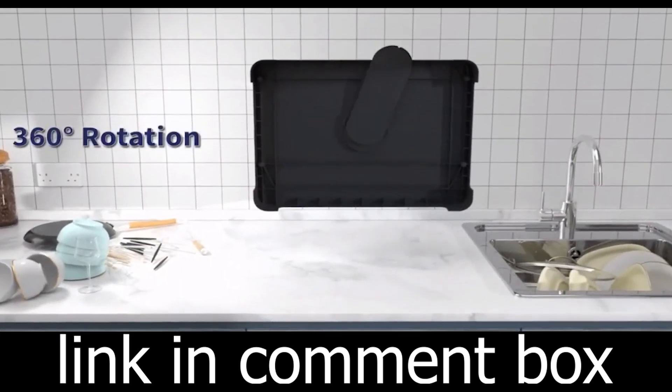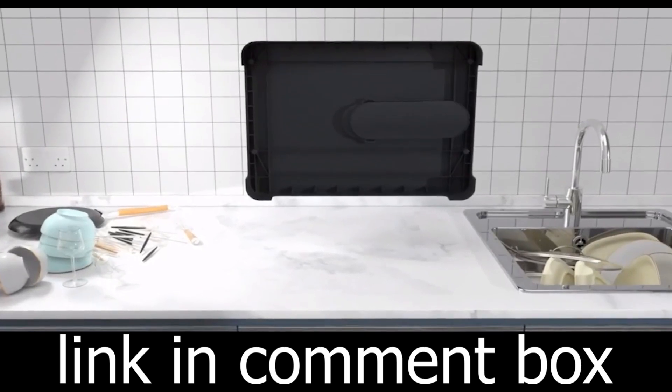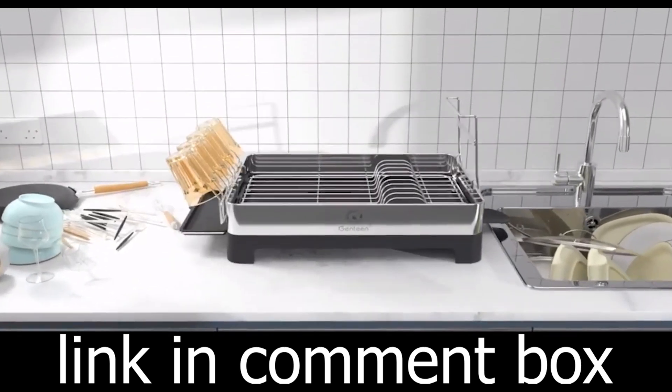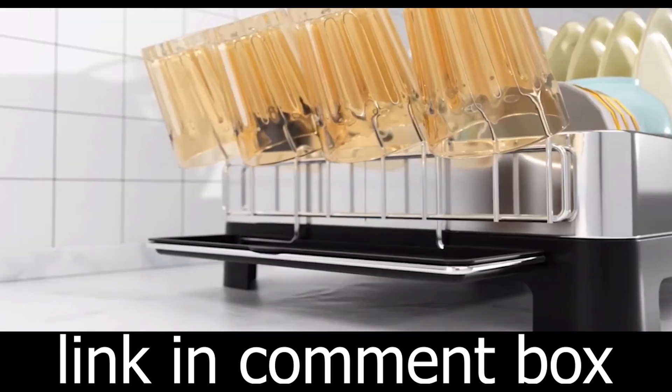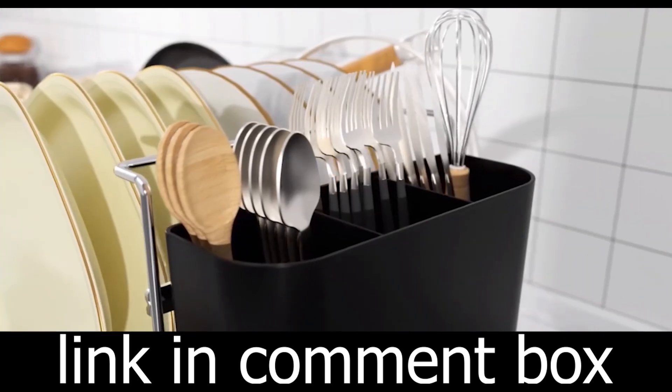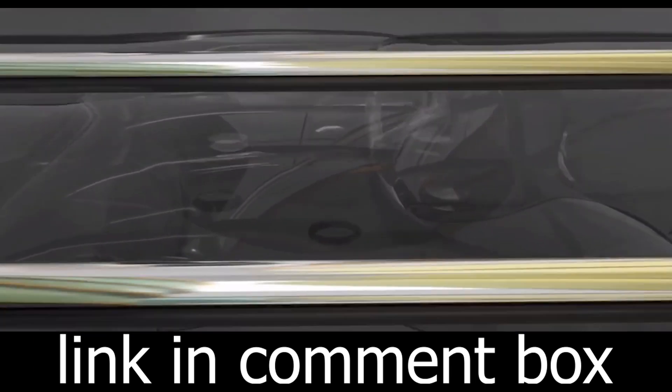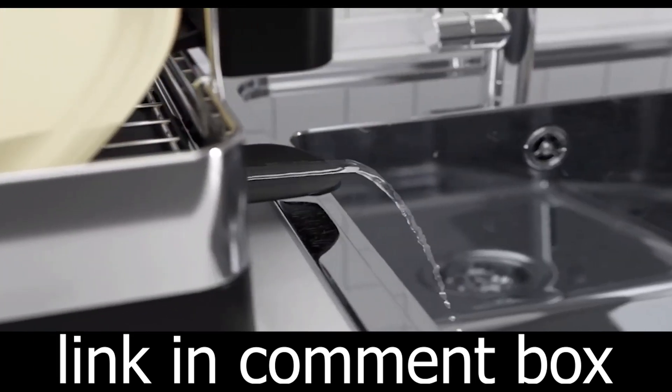The 7 Code Dish Drying Rack comes with a detachable two-tier design, providing you with ample space to store all your tableware. From dishes, plates, and bowls to mugs, pots, and frying pans, with a dedicated utensil holder and cup rack, this rack has a place for everything.